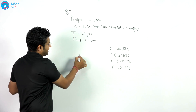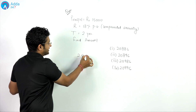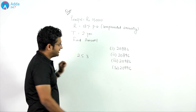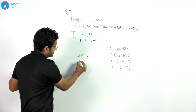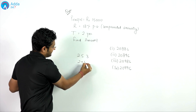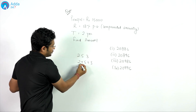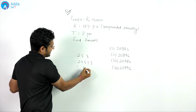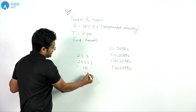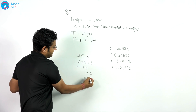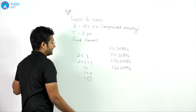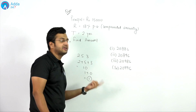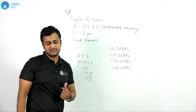For example, if the number is 253, the digital sum will be 2 plus 5 plus 3. So 2 plus 5 is 7, plus 3 is 10, and then 1 plus 0 gives us 1. So we keep summing the digits until we get a single digit.